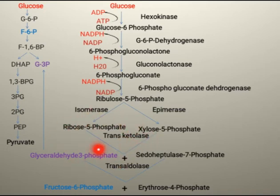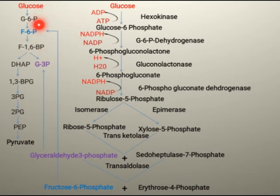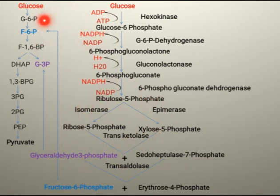And sedoheptulose 7-phosphate, after losing 3 carbons, changes into a 4-carbon containing sugar known as erythrose 4-phosphate. Fructose 6-phosphate can again follow the glycolysis pathway, since fructose 6-phosphate is also an intermediate in glycolysis.